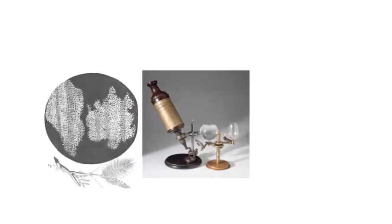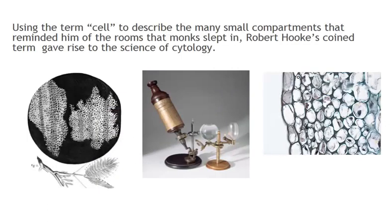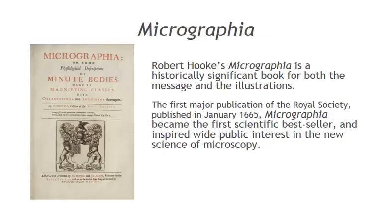Perhaps one of Hooke's most famous drawings is that of a thin section of cork cambrium. Using the term cell to describe the many small compartments that reminded him of the rooms that monks slept in, Hooke coined the term cell and perhaps gave rise to the science of cytology. Robert Hooke's Micrographia is a historically significant book for both the message and the illustrations. The first major publication of the Royal Society, published in January 1665, it became the first scientific bestseller, inspiring a wide public interest in the new science of microscopy.